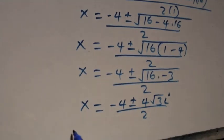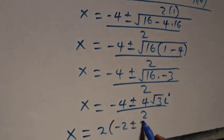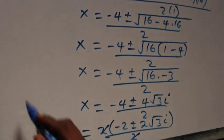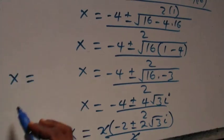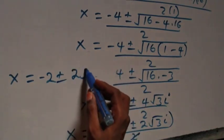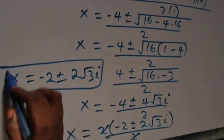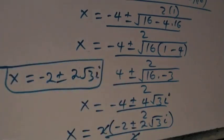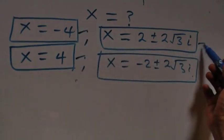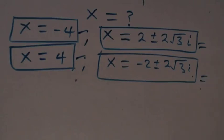This simplifies to x equals minus 2 plus or minus 2 root 3i, giving two more complex solutions. Therefore, all together we have six solutions: two real solutions (x = -4 and x = 4), two complex solutions from the first case, and two complex solutions from the second case.